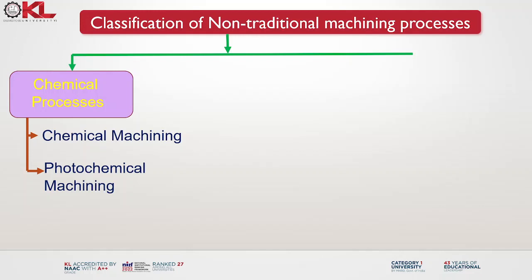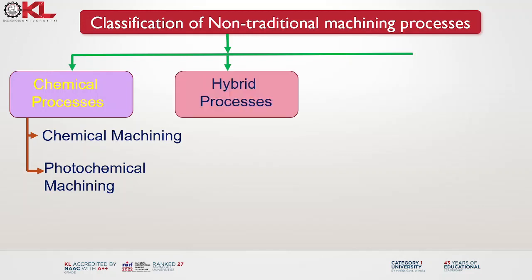Chemical machining finds applications in various industries including aerospace, electronics, automotive, medical devices and precision engineering. It is commonly used for the production of intricate components such as electrical contacts, micro-electromechanical systems (MEMS), fluidic devices and aerospace structural parts.